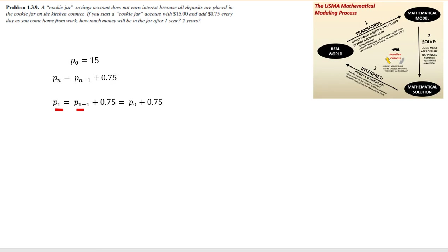Our result is that p sub 1 equals p sub 1 minus 1 plus 0.75, which is the equivalent of p naught, our initial condition, plus 0.75. We can take this one step further by substituting in what we know, which is our value for p naught. P naught equals 15, so we substitute in that value to find that p sub 1 equals 15 plus 0.75, which gives us a total of 15.75.